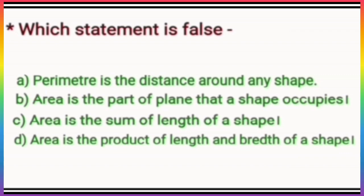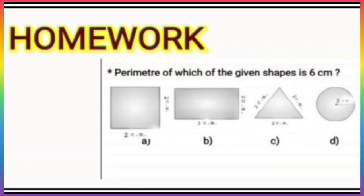Now option B: 'area is a part of a plane that a shape occupies.' Yes, of course, so this is also a true statement. Now option C: 'area is a sum of length of a shape.' No, it's not like that. And option D: 'area is the product of length and breadth of a shape.' Yes, it is. In this way, children, which one is the incorrect statement? Yes, it's option C, which is false. So let's put a tick here.